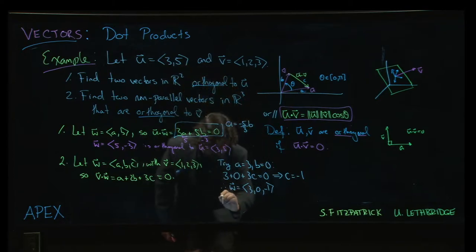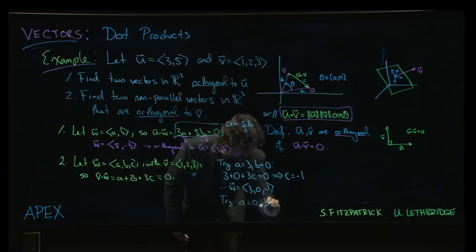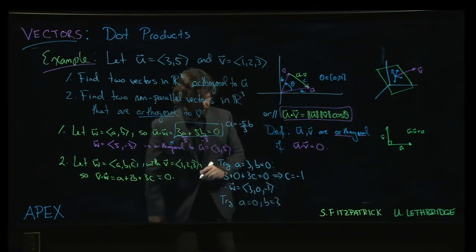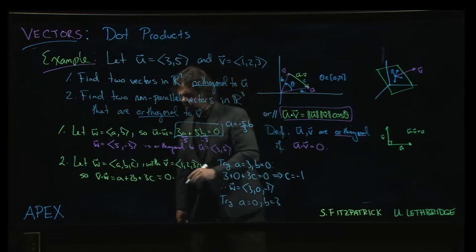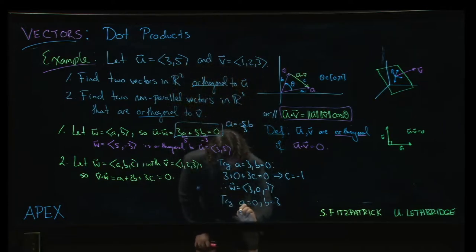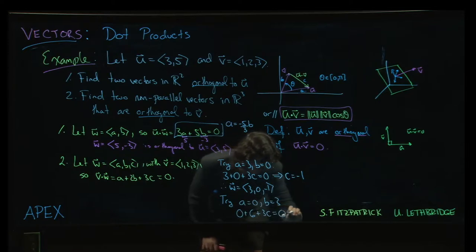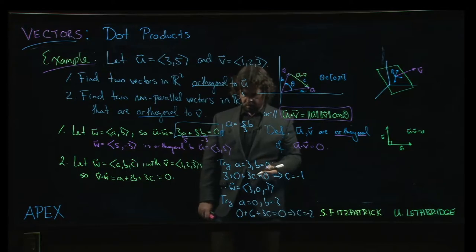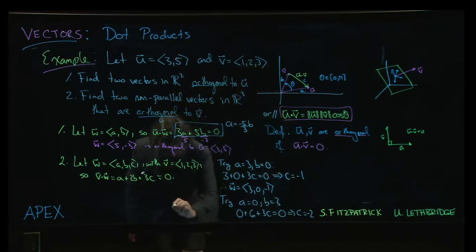We could also try flipping those around. We could take a equals 0, b equals 3. If we put those in, we would get 0 plus 6 plus 3c equals 0. So this time c would have to be negative 2.